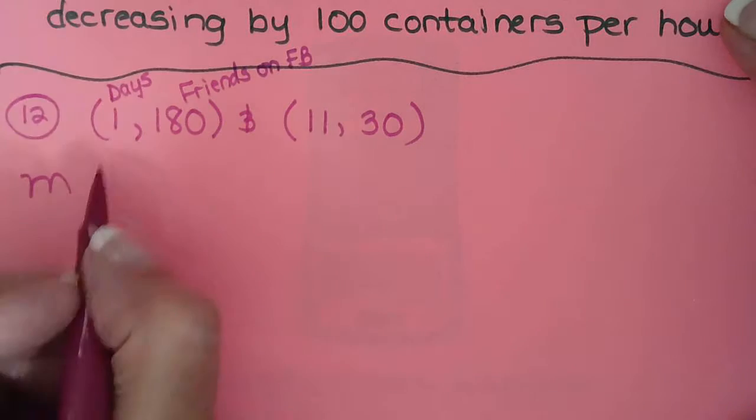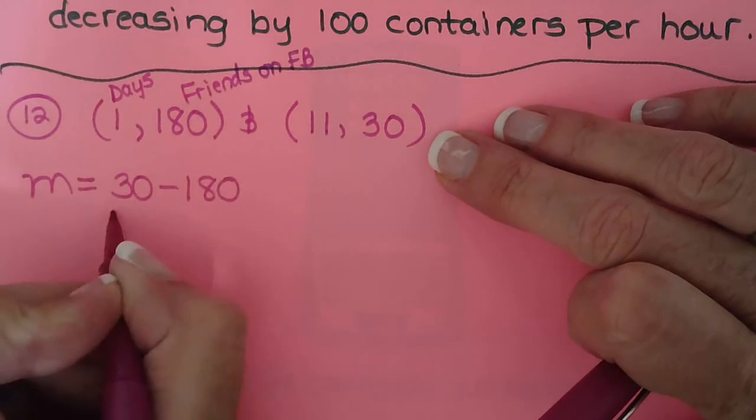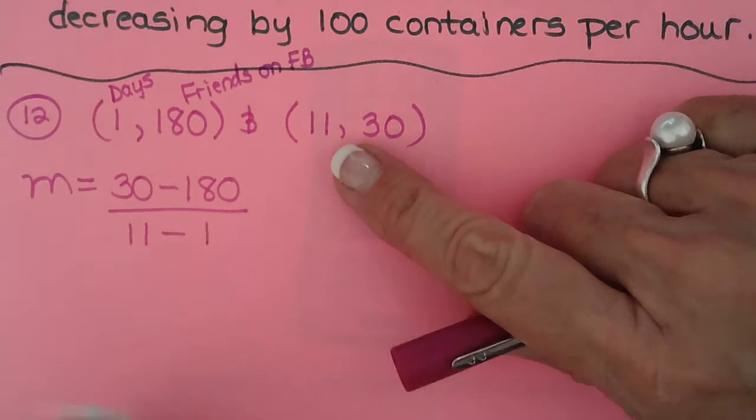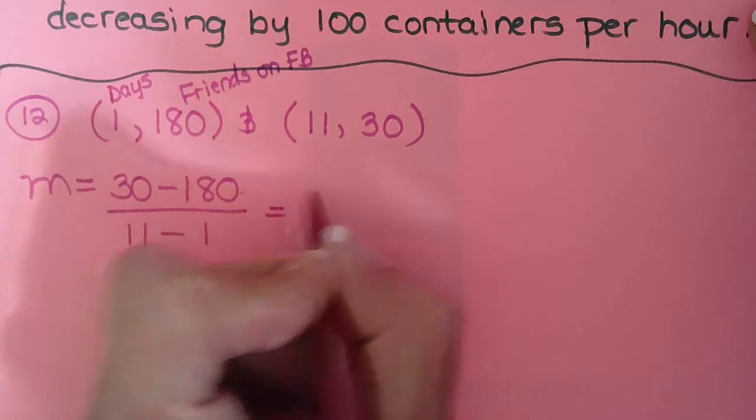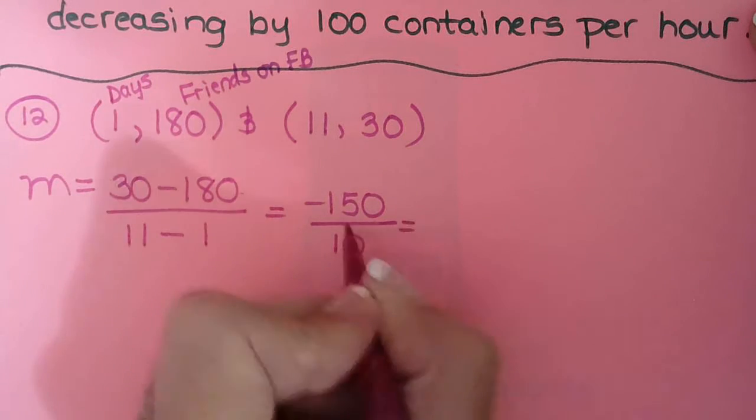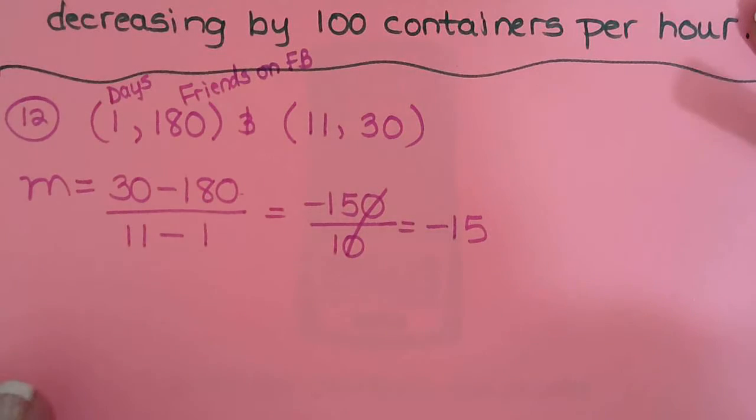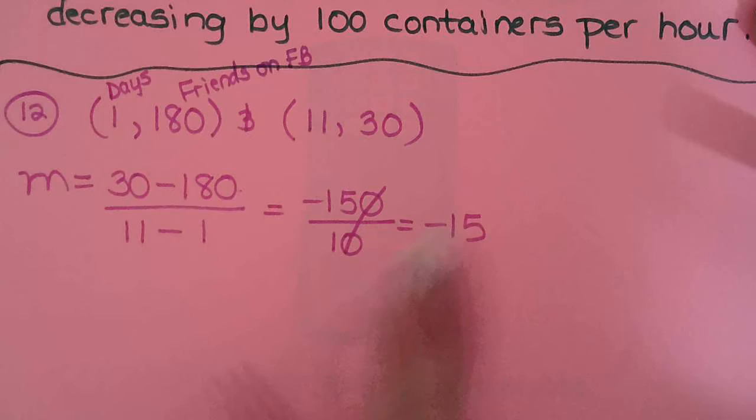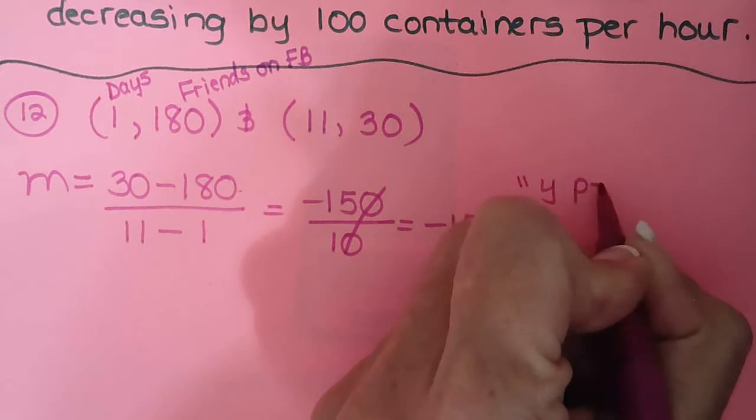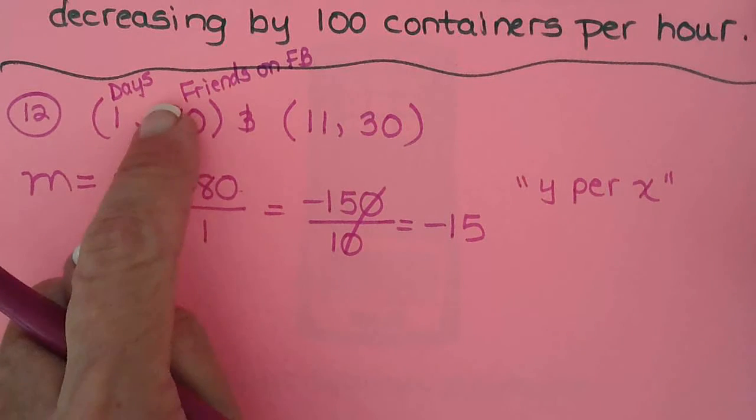So it should be a negative slope. So second y, 30 minus the first y, 180, over second x, 11, minus the first x, 1. And that gives us negative 150 over 11 minus 1 is 10, which is negative 15. So just as we predicted, the slope is negative because his number of friends are going down, just like the popcorn containers were. So now we have to label it with y per x. So that would be friends per day.